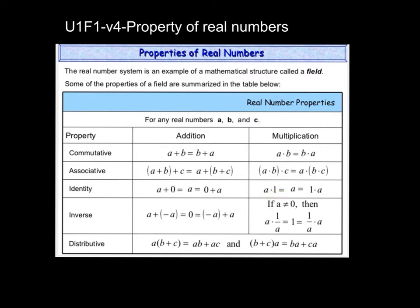Inverse property — that's just where you add its inverse or multiply an inverse. It's A plus negative A. Those would cancel and equal 0. Generally we use equations with this, so you won't deal with this for right now.